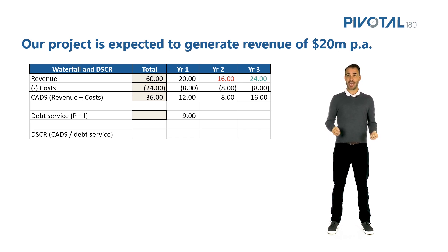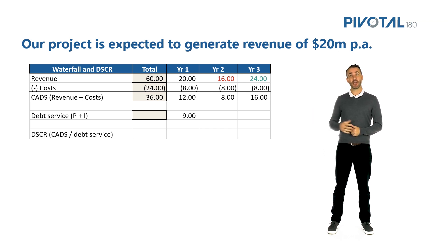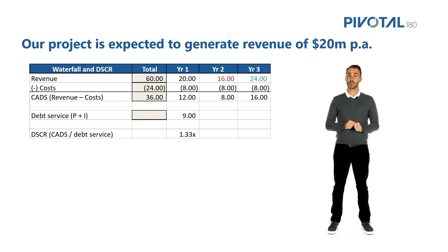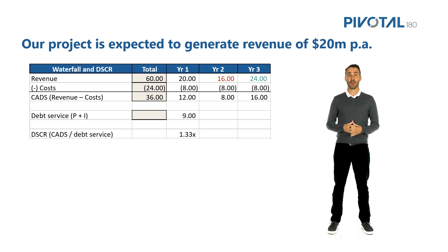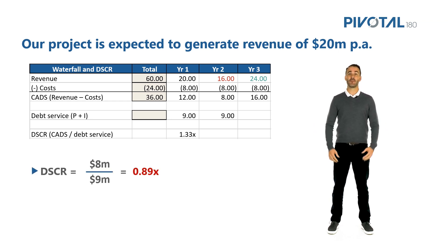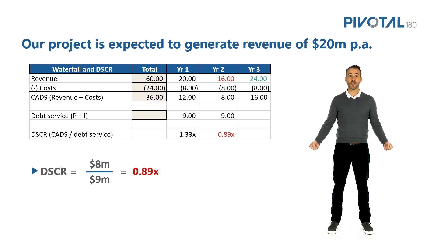So in year one, when things actually went to plan, our DSCR was 1.33. But in year two, CADs was way down from $12 million to $8 million, and our debt service is $9 million. Our DSCR is 0.89 — we don't even have enough money to pay our debt service. We're in default.